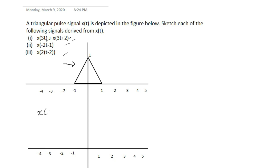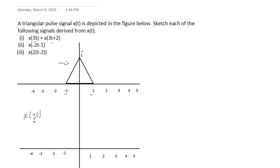Let's start by taking the first one: X(3t). From this we know that this is time scaling — 3 is our scaling factor, so a equals 3. Since a is greater than 1, we compress the signal rather than expand it.